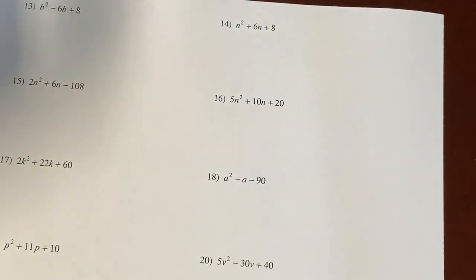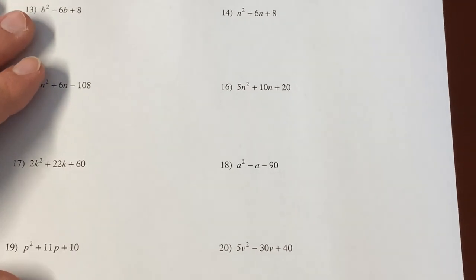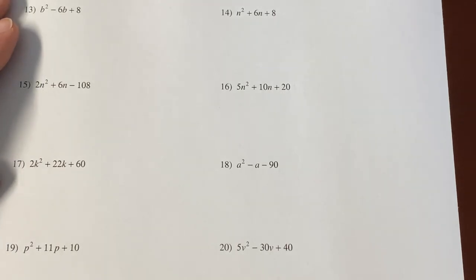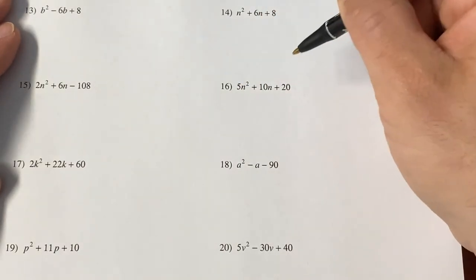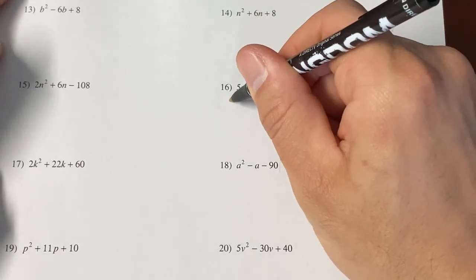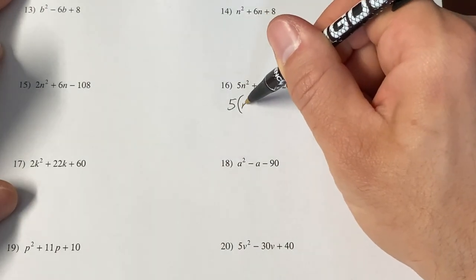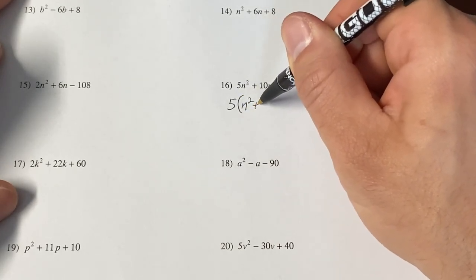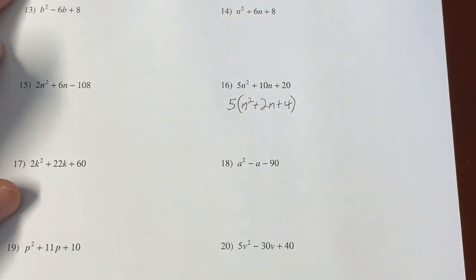Let's take a look on this second page here where we will have some that have a GCF. Take a look at number 16 here. 5n squared plus 10n plus 20. Anyone notice the greatest common factor there? Wait for it. So, 5, 10, 20. They have a greatest common factor of 5.